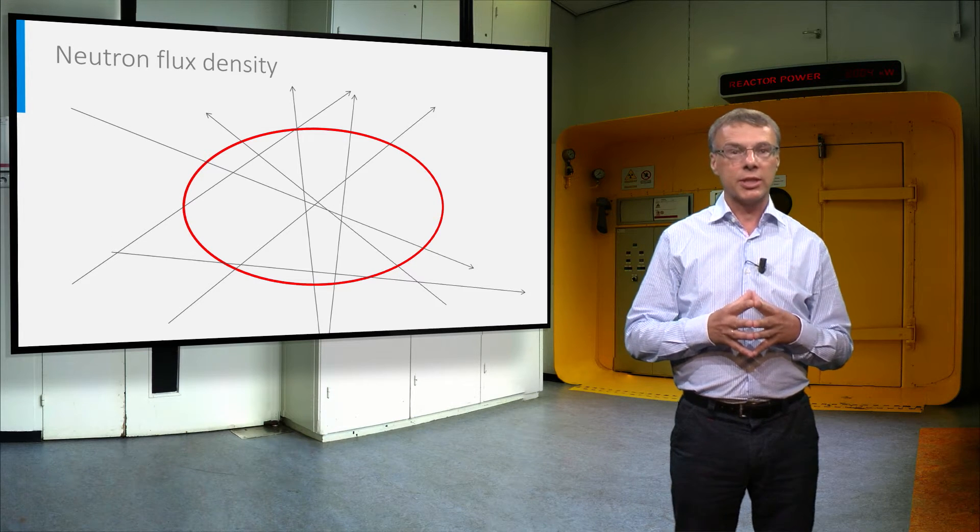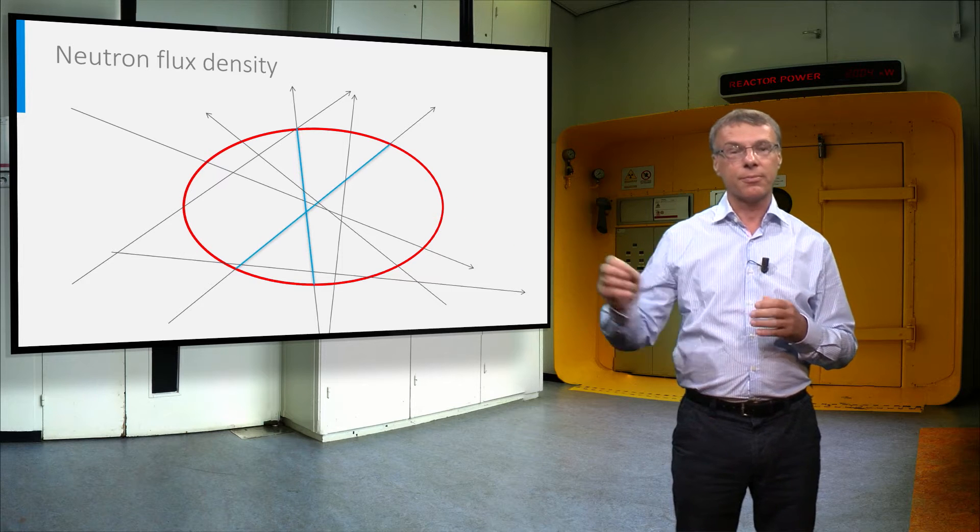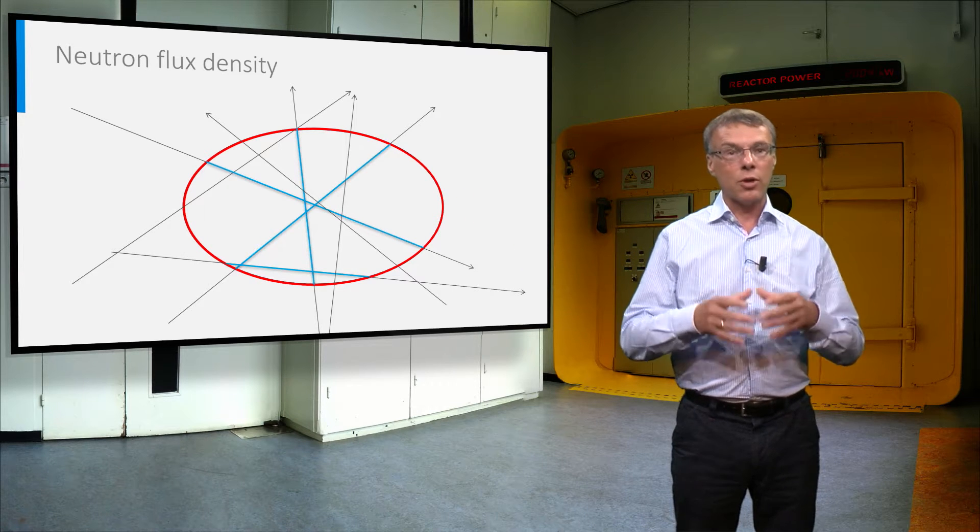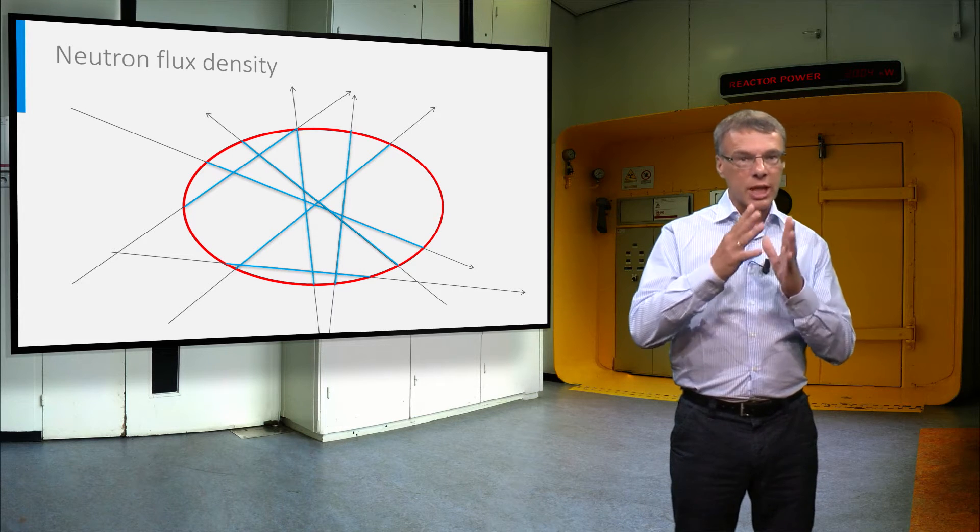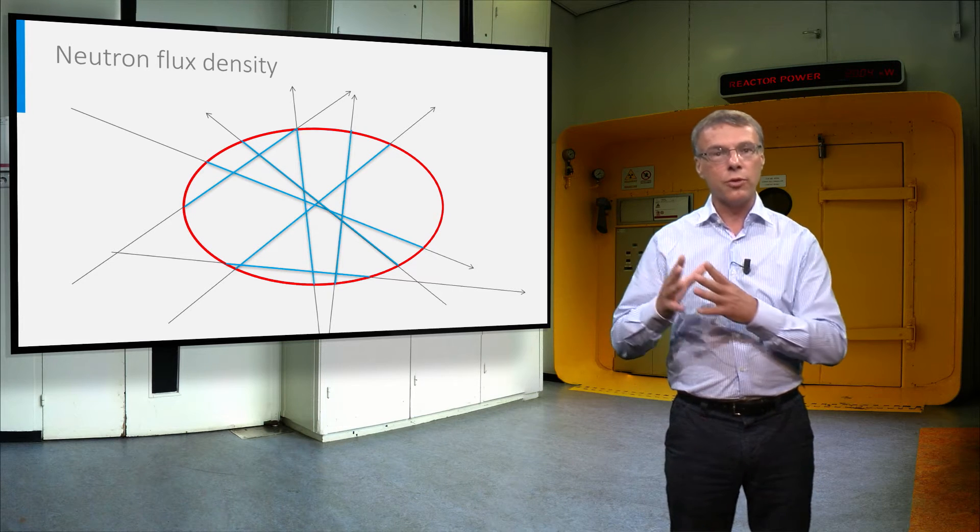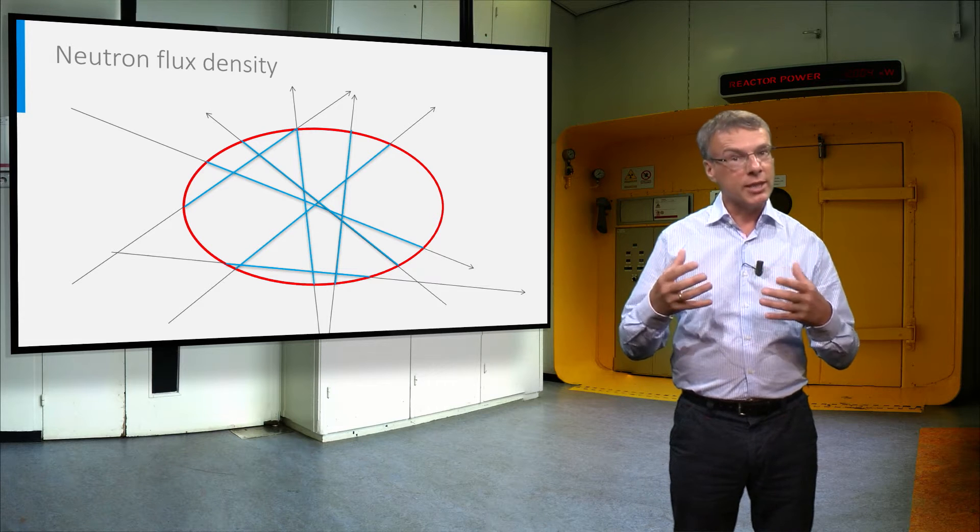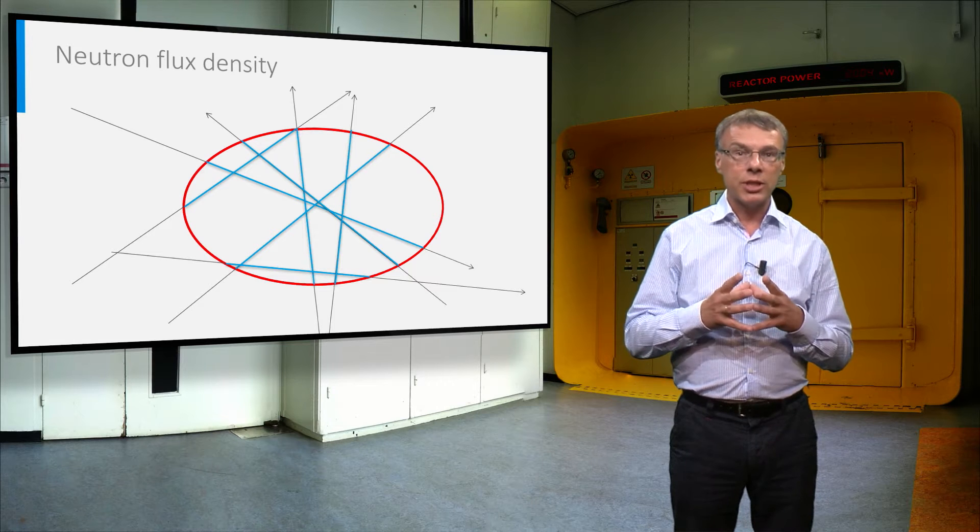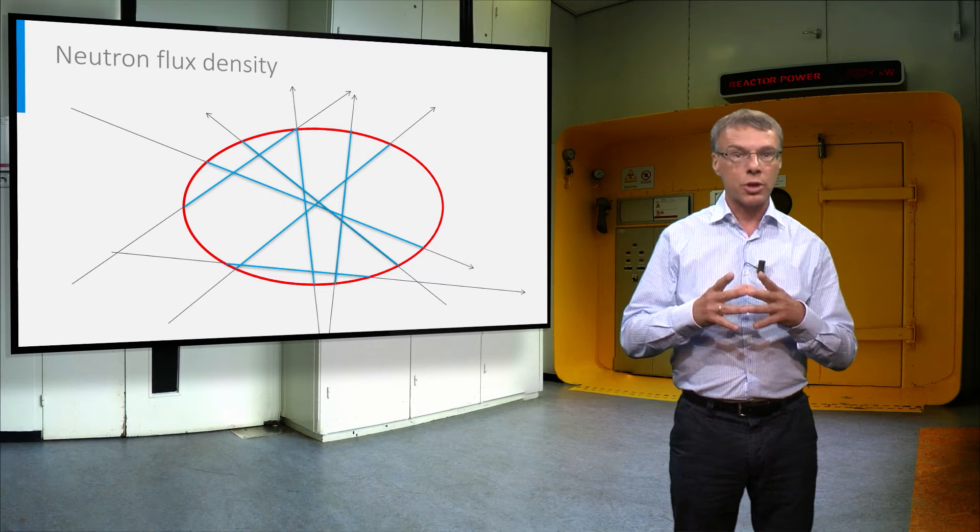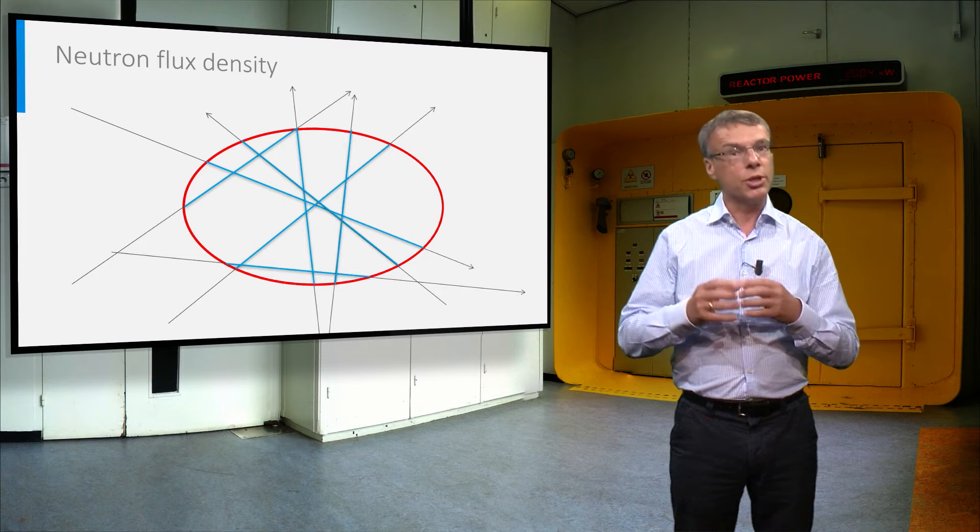The definition of the neutron flux density is illustrated in this figure. Suppose we have an arbitrary volume traversed by neutrons. If we sum the segments of all neutrons through the volume per second and divide by the size of the volume, we get the neutron flux density. It is the total distance traveled by all neutrons per unit volume and per unit time.